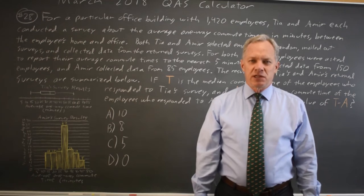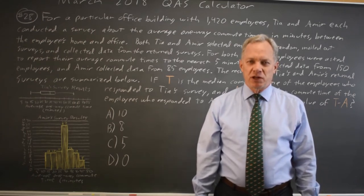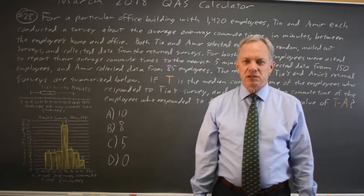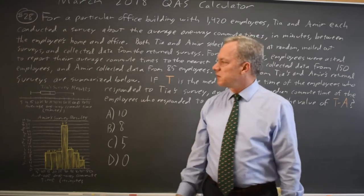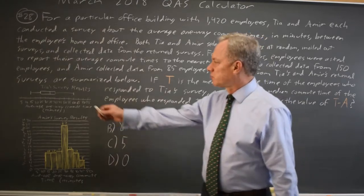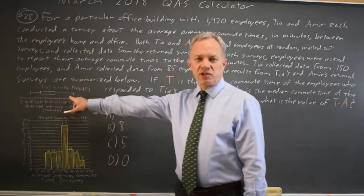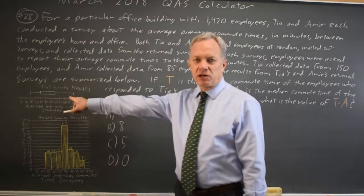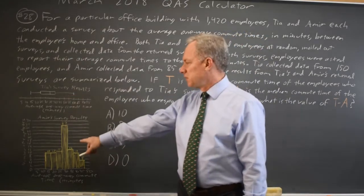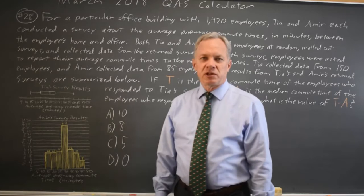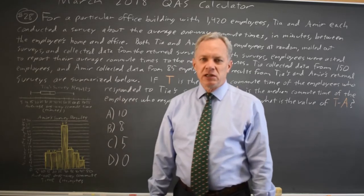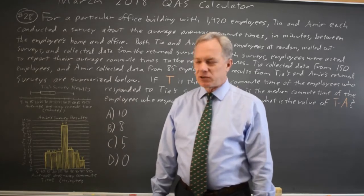This is question 28. We have a very long word problem about the difference between the median value for TIA's survey, which is given in a box plot, and AMIR's survey, which is given in a histogram.